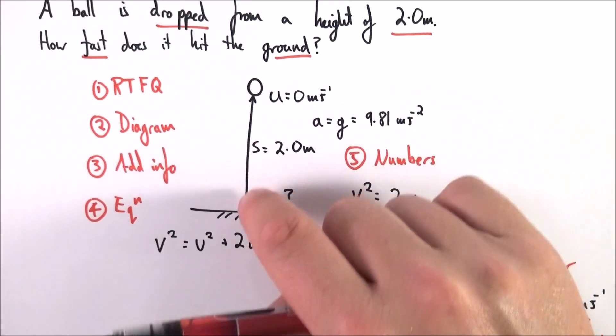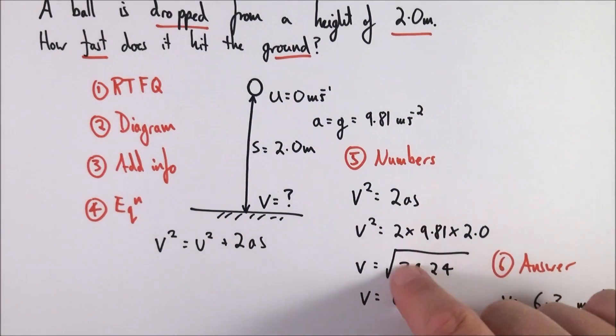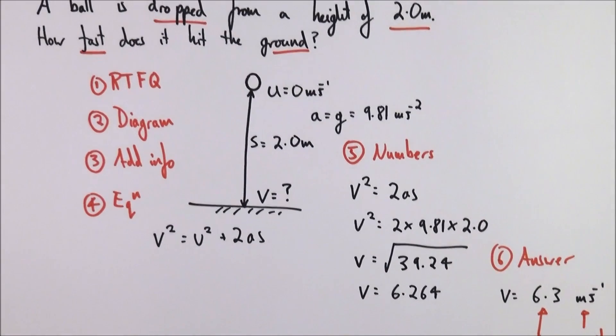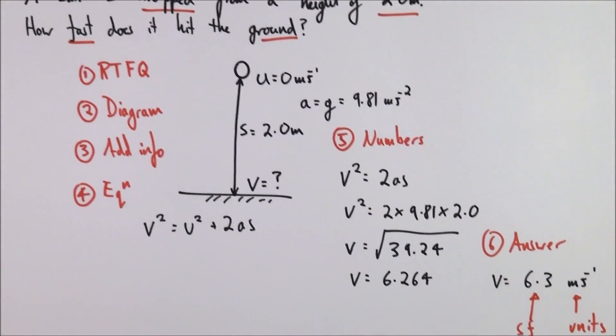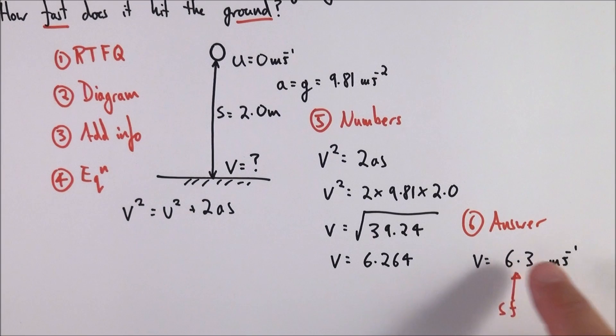Once you've got that information, you can then write out your equation, put in the numbers and show your working in case you make any mistakes. You can then give your answer, checking that it's to an appropriate number of significant figures, you've got your units, and it looks about appropriate.